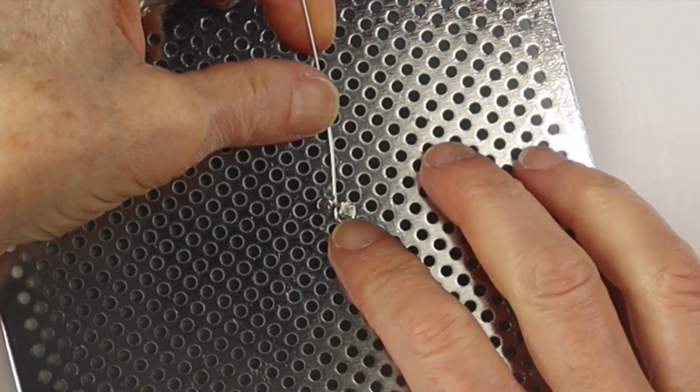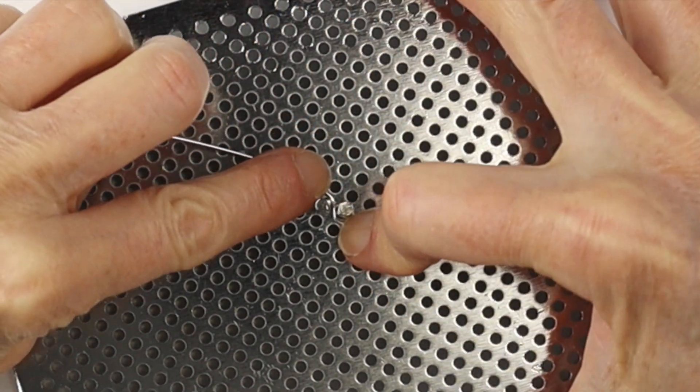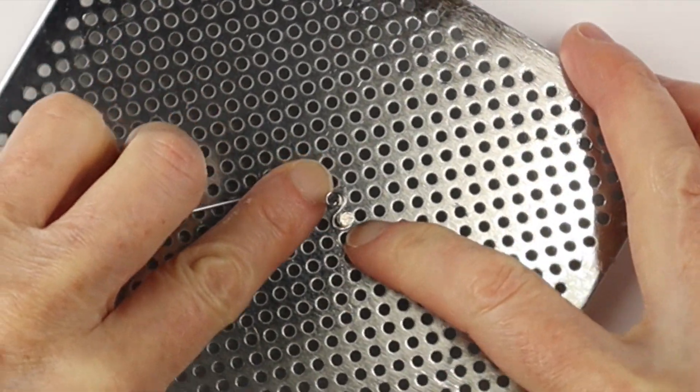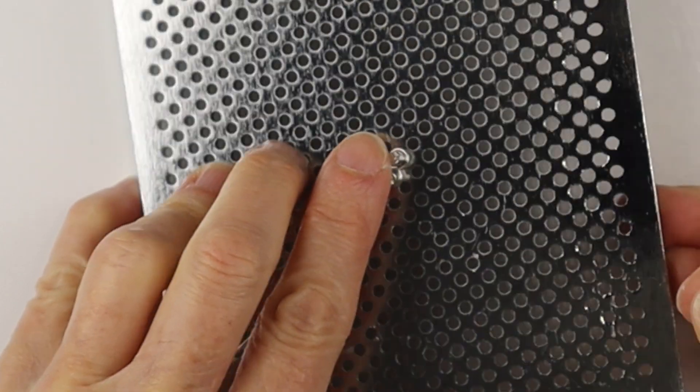And then we are going to hold it firmly and twist the jig around so we have a nice smooth curve.